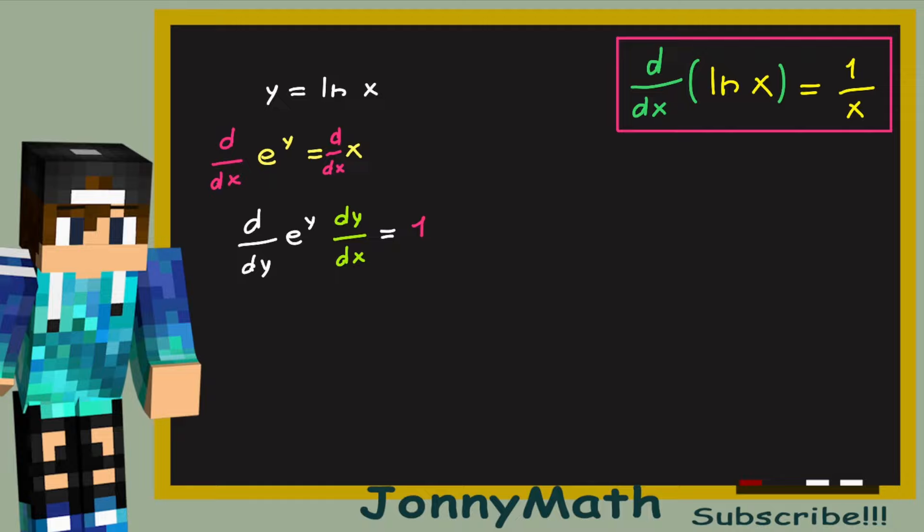But now, d over dy of e to the y is just e to the y, because the derivative of the exponential function is the exponential function. Then we have times dy over dx, and this equals 1.